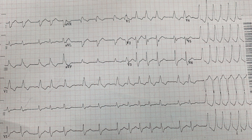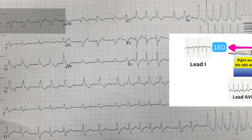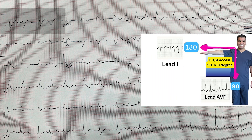Let's move to this EKG. The QRS net deflection is negative in lead 1, meaning it's going in the direction of my stretched right arm at 180 degrees. AVF is positive, meaning it's going in the direction of plus 90 degrees. So the axis is between plus 90 and 180 degrees — this is what we call a right axis deviation.